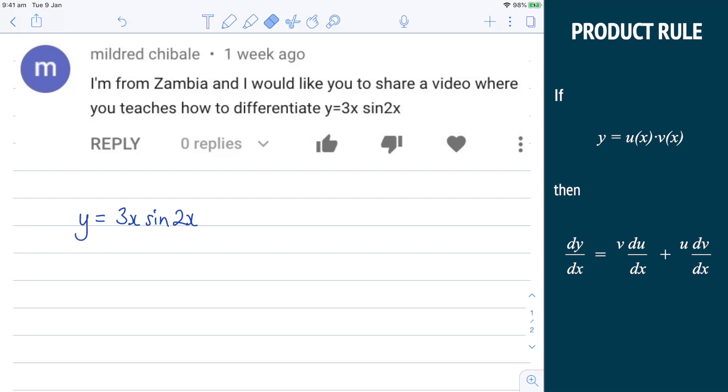So I'm starting with y equals 3x sine 2x. Now, I know that is a product of two functions. I've got the 3x and I've got the sine 2x. So therefore, I'm going to use the product rule.